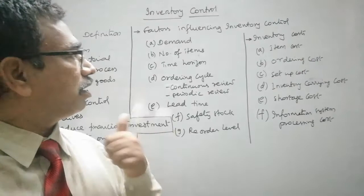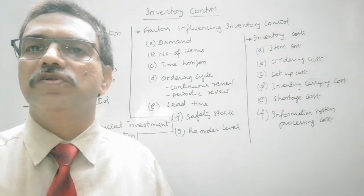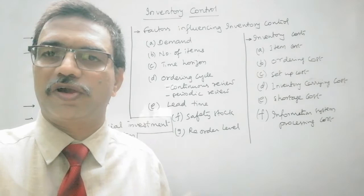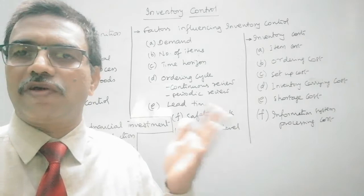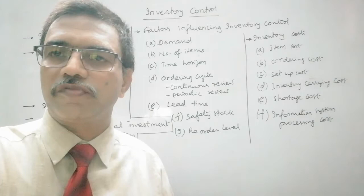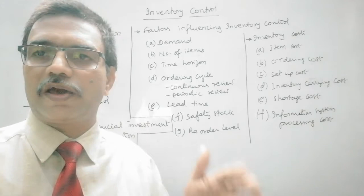Then there is time horizon — the planning period over which we determine the quantities of different types of materials. This planning horizon may be a month, but for most models it will be a year. For a financial year's requirement, we make plans and then disaggregate it into monthly or weekly plans.